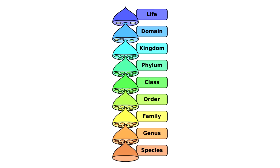So hominids, in terms of taxonomic classification, are a family, and hominins are a tribe or subgroup of that family. Hominids are the bigger group, and hominins are the much smaller group.